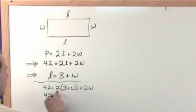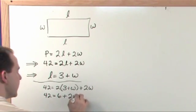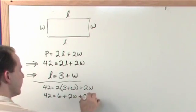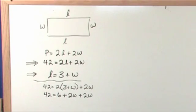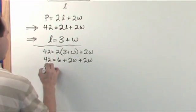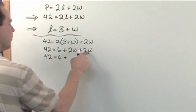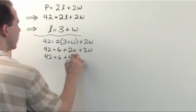42 is equal to, distribute this 2 in, 2 times 3 gives me 6 plus 2 times W gives me 2W and then of course I have this 2W over here that just is along for the ride. So then 42 is equal to 6 plus 2W plus 2W is 4W.